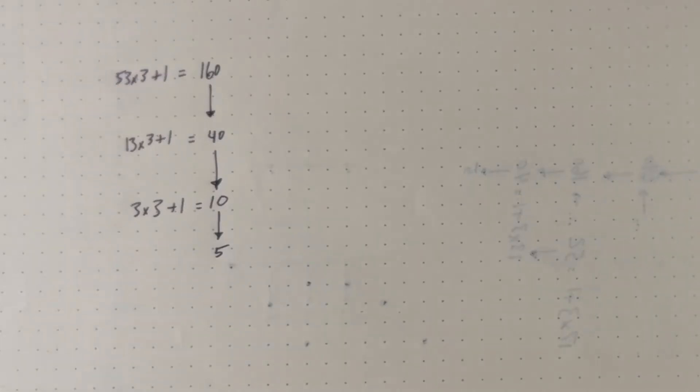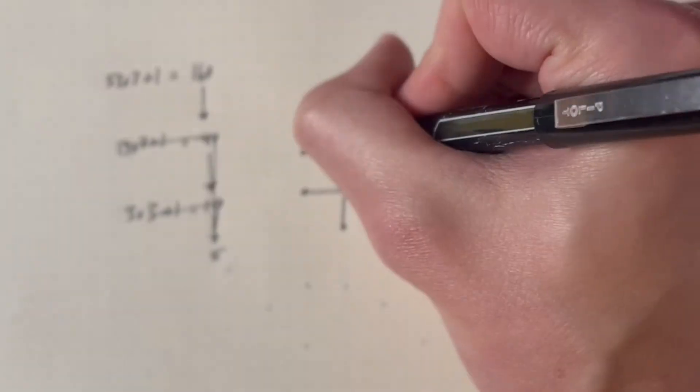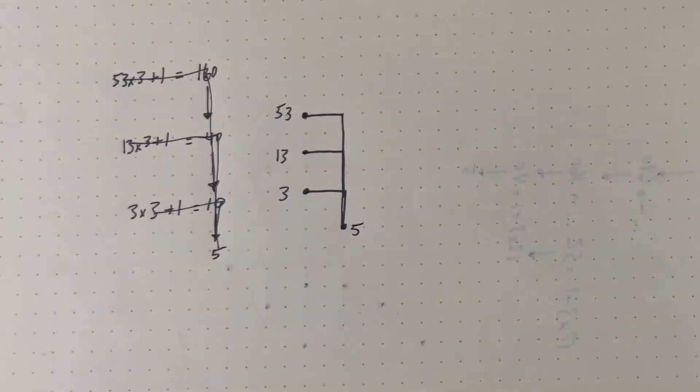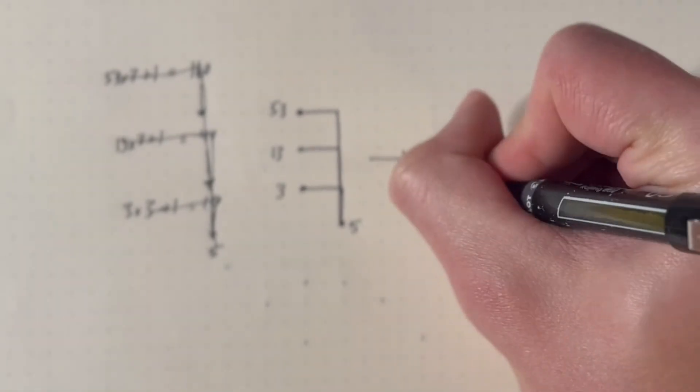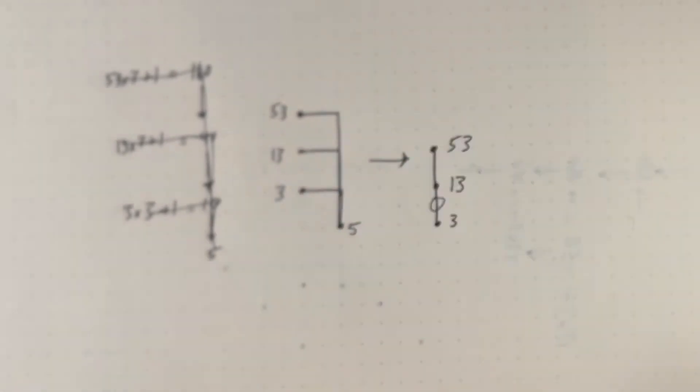And then to the right of it, I'm showing a simplified version of this notation that skips out a lot of the algebra. And to the right of that, I'm showing an even simpler version of this notation.